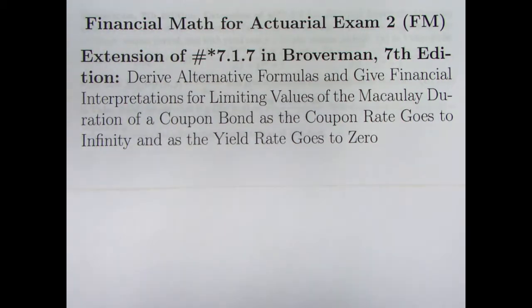In the last video, video 156, which you definitely should watch before this one, we looked at problem 7.1.7 in Broverman. We were looking at the Macaulay duration of a coupon bond and thinking about limiting values of that duration as various quantities either approached infinity or approached zero. I said for two of these situations that the formula was complicated enough that it was difficult to give a financial interpretation to what we saw.